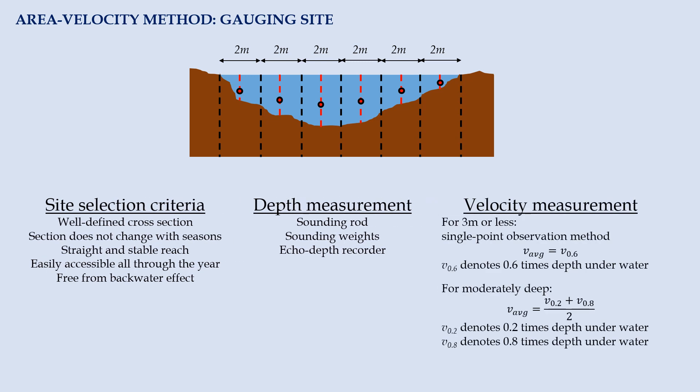If the depth is only up to 3m, we will put the current meter at the point of 0.6 times the depth below water surface. This is also known as single point observation method and the result we obtain can be treated as the average velocity in that vertical. For moderately deep stream, we may observe the velocity at two points, at 0.2 and 0.8 times the depth beneath the water surface. The average velocity will be the mean of these values.